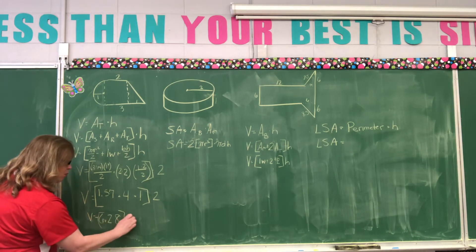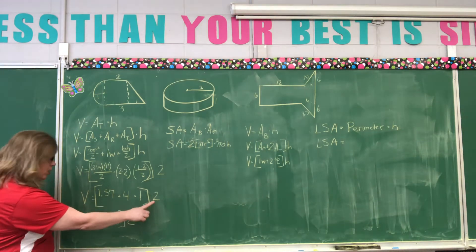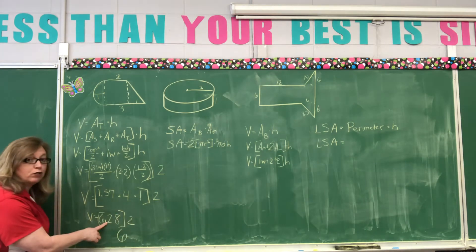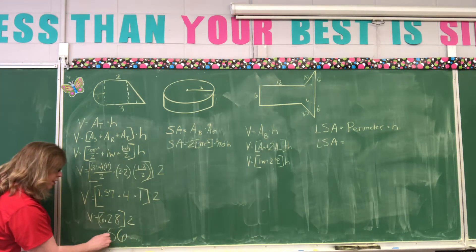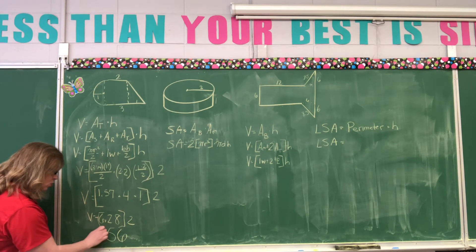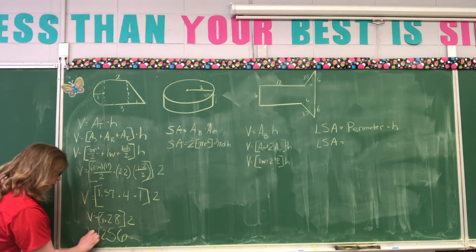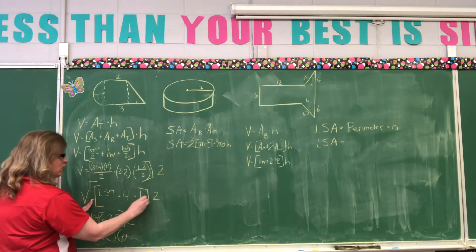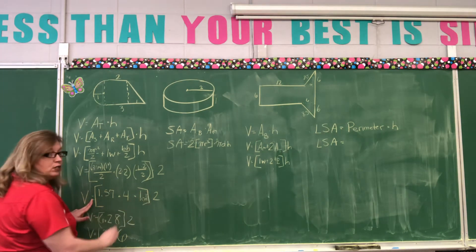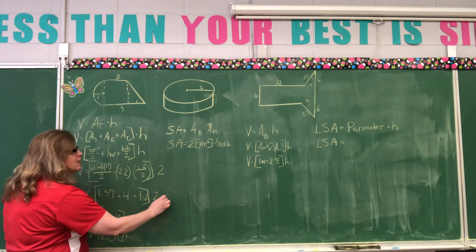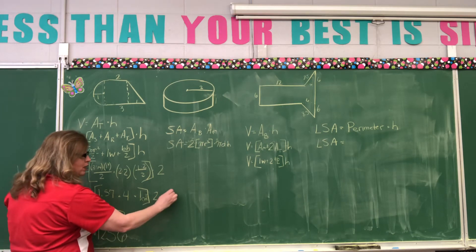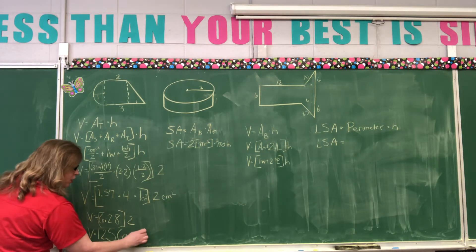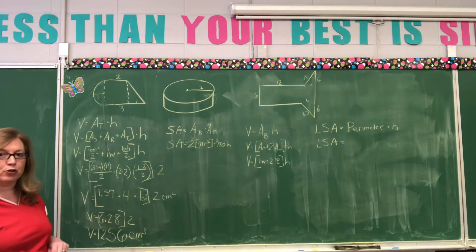We're going to take that, multiply it by our height now. So, 2 times 8 is 16. 2 times 2 is 4, plus 1 is 5. 2 times 6 is 12. So, the volume is 12.56. What's our label? Well, remember, this is area. So, we're going to say this is square centimeters. This is just a height, and it's also in centimeters. So, my answer then is going to be cubic centimeters.